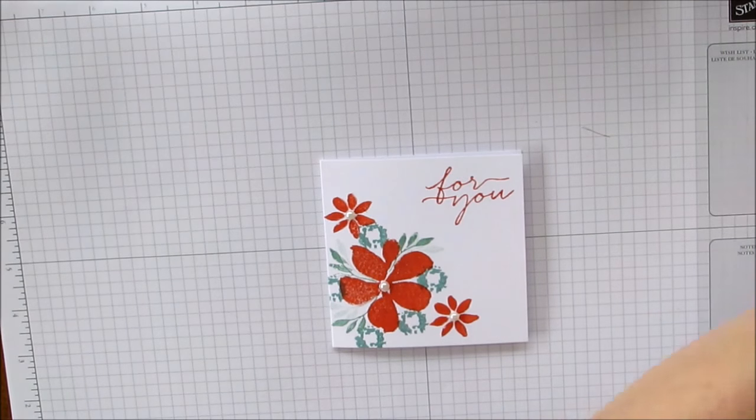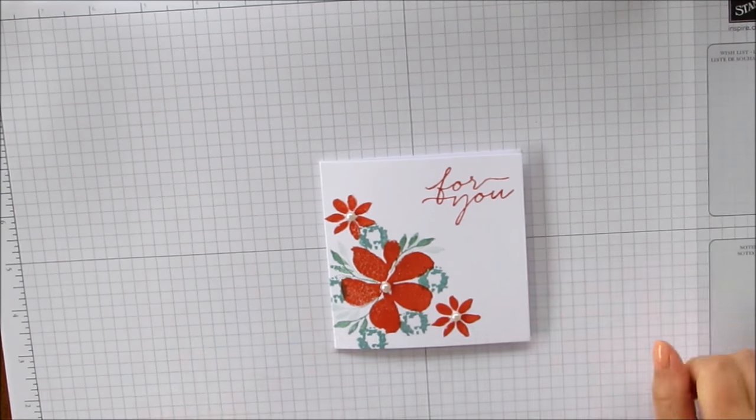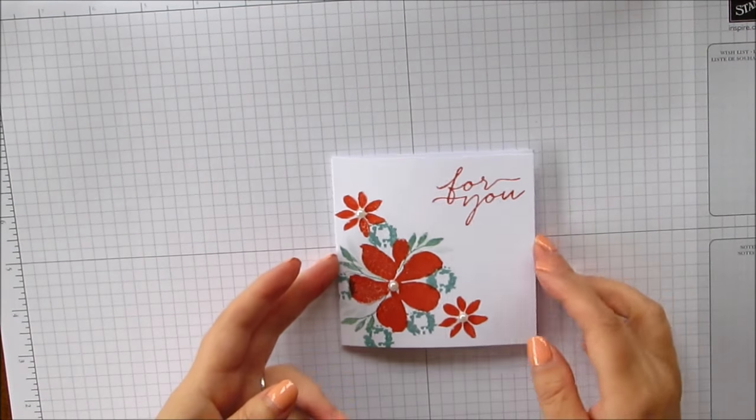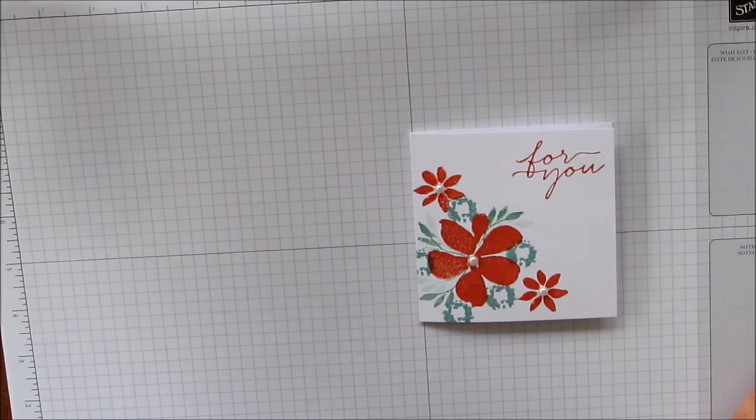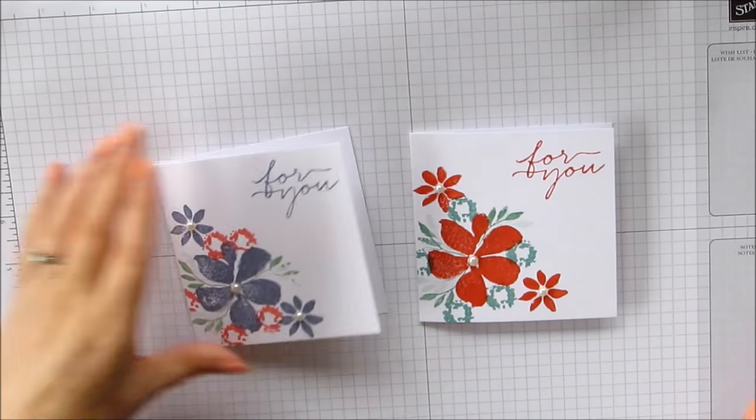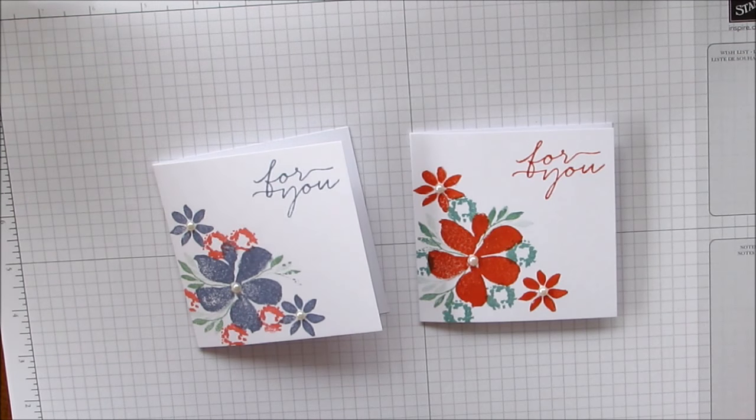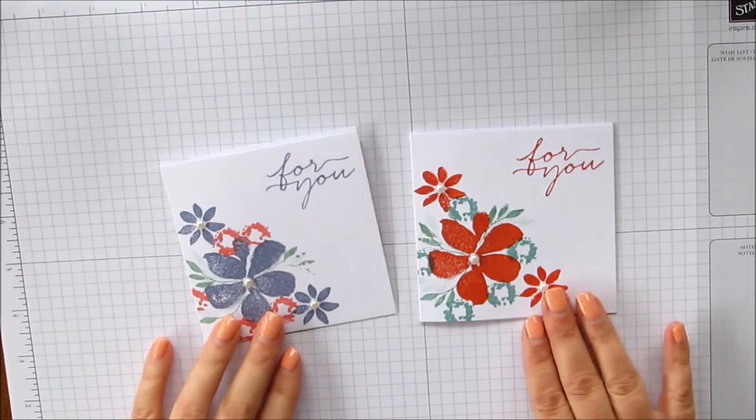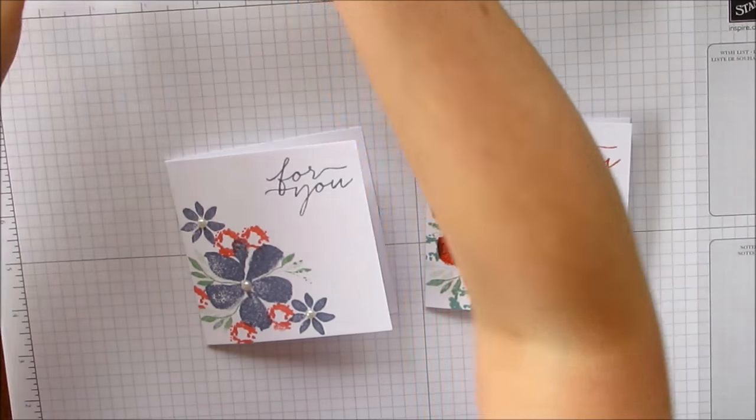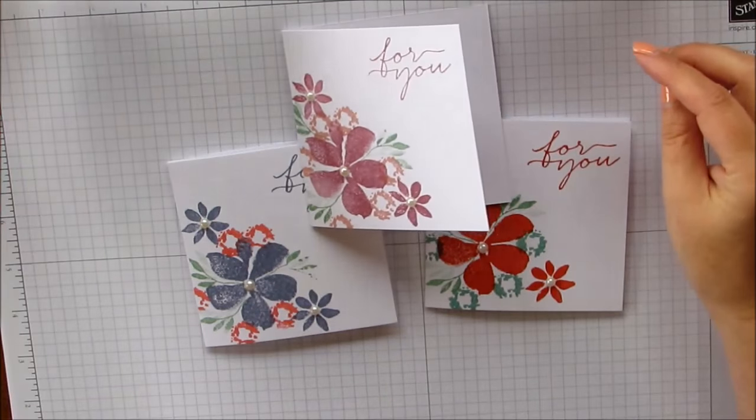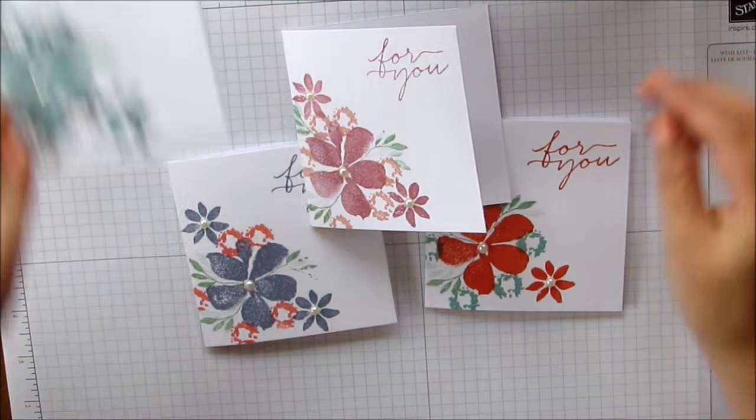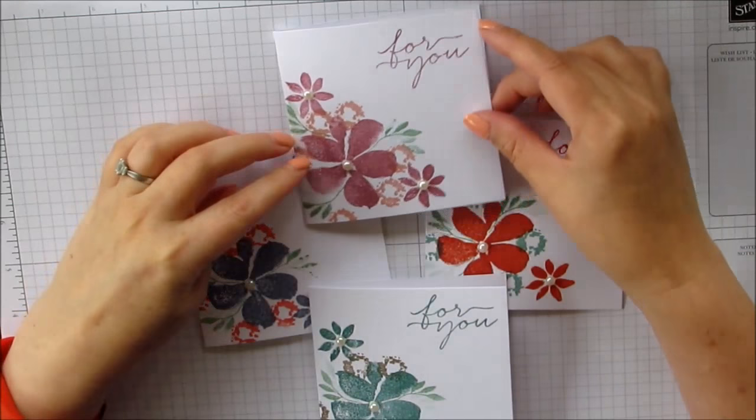That's it. Really quick. Really easy. Super simple. One stamp set. Just a couple of inks. So that one we used Pool Party and Calypso Coral. This one was Wisteria Wonder with Flirty Flamingo. This one I used Sweet Sugar Plum and Blushing Bride. And then lastly I tried Lost Lagoon and Tip Top Taupe.